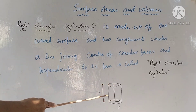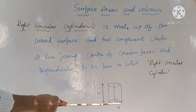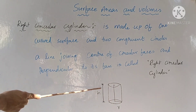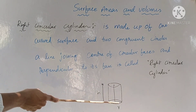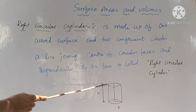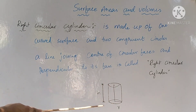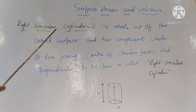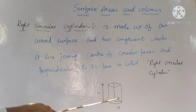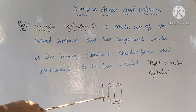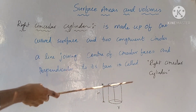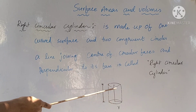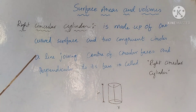This is the right circular cylinder. This is the radius of the base circle and this is the height — the distance from the bottom circle to the top circle is called height. It is made up of one curved surface and two congruent circles — top and bottom.